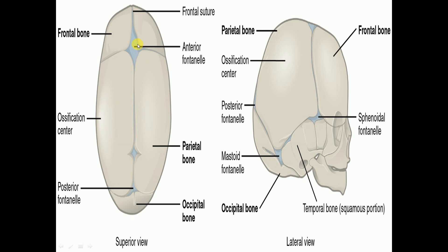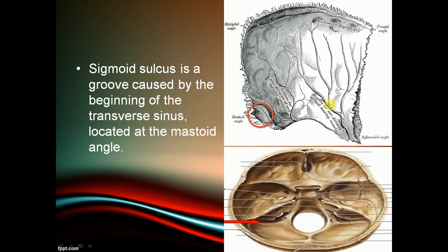The anterior and posterior fontanelles are seen at the ossification centers. The sigmoid sulcus is a groove caused by the beginning of the transverse sinus, located in the mastoid angle.